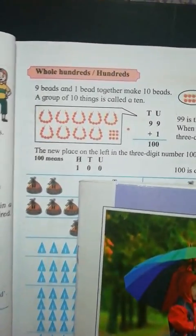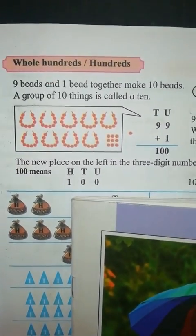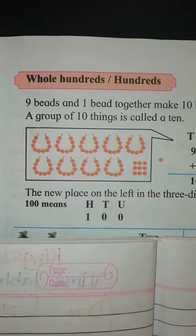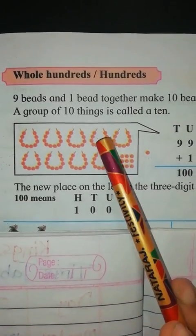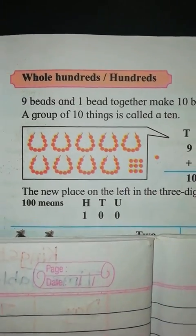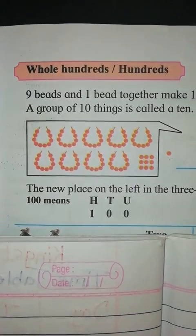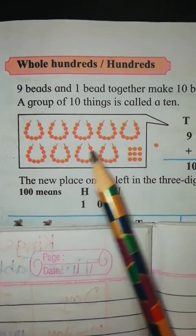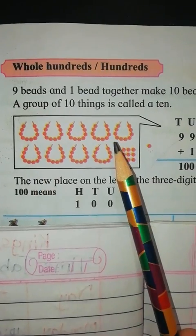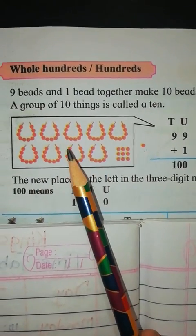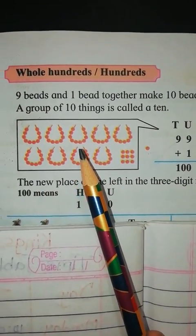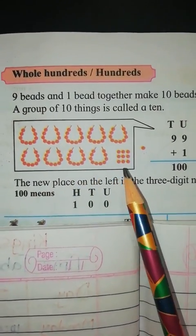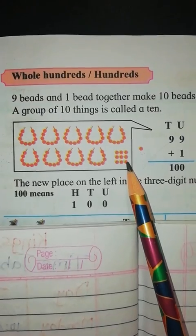Look at this picture carefully. Observe it carefully. What is in this picture? There are some strings of bits and some single bits.